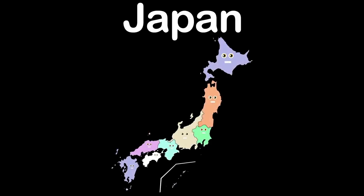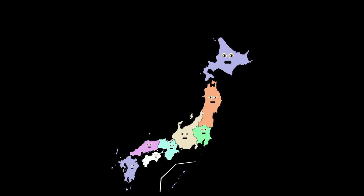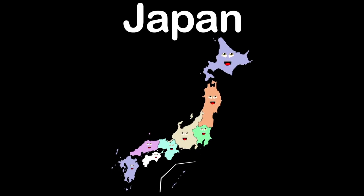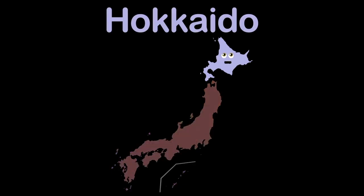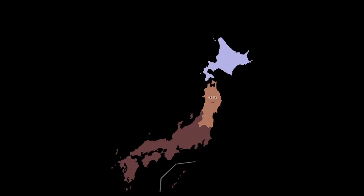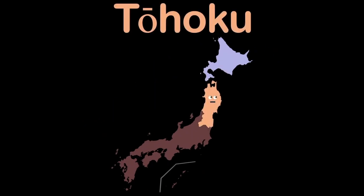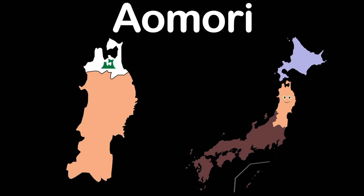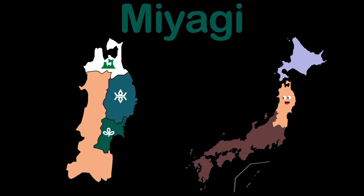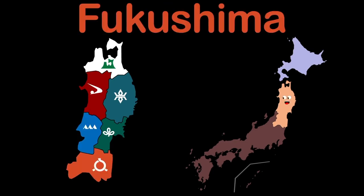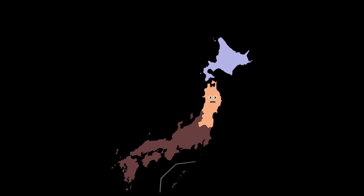We're the 8 regions of Japan — there are 47 prefectures within our regions. I am Hokkaido, a northern region with one prefecture also named Hokkaido. I am Tohoku, the northeast region, with six prefectures: Aomori, Iwate, Miyagi, Akita, Yamagata, and Fukushima.